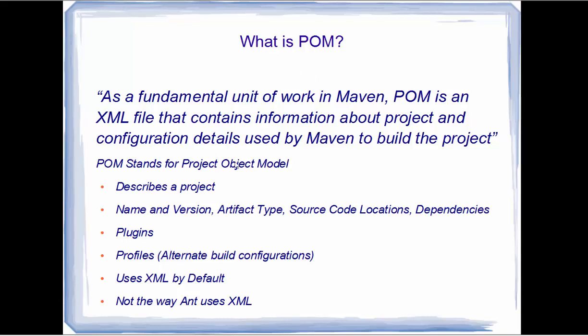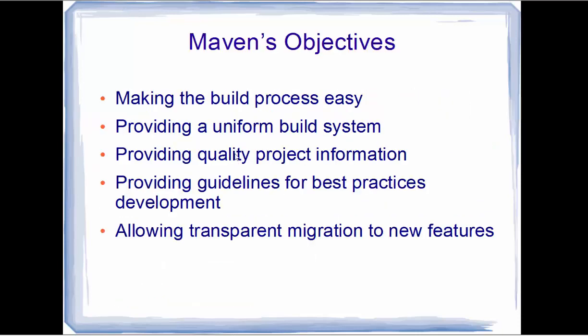Maven uses XML by default, but not in the way ANT uses XML — ANT is also a build management system. The important objectives of Maven are: to make the build process easy, to provide a uniform build system, to provide quality project information, to provide guidelines for best practices development, and to allow transparent migration to new features.